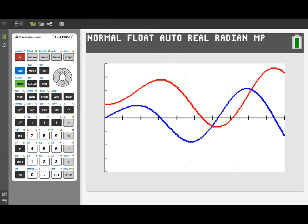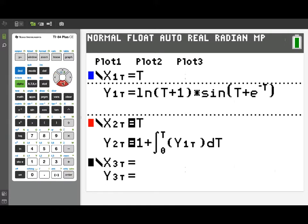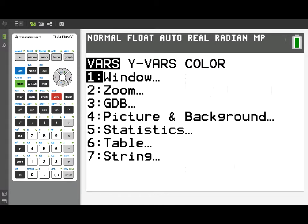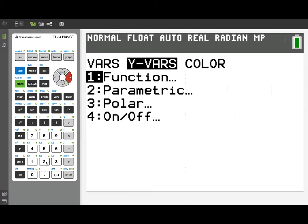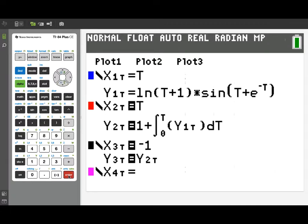Now this is the reason we used parametric in the first place, is we can take advantage of it to actually visualize this motion. So I'm going to go back to the y equals menu, and I'm going to enter another pair of parametric equations. X3 of t, I'm just going to make equal to the constant negative 1, and y3 of t, I'll make it that same position function we had before. So I'll just define y3t to be y2t.